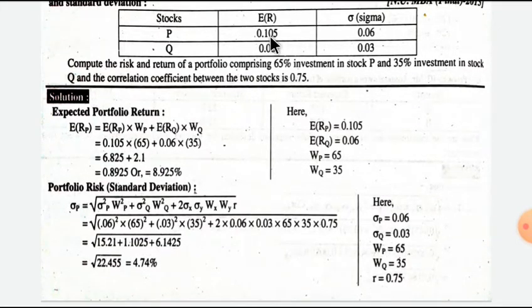Expected return on P is 0.105, expected return on Q is 0.106, weight of P is 65, weight of Q is 35. The calculation gives 0.8925, which is approximately 9%.